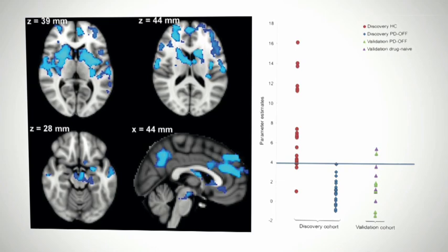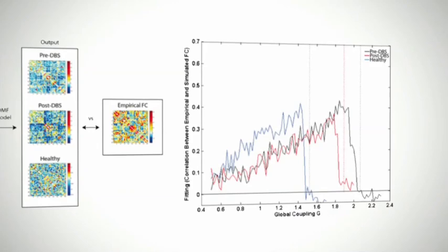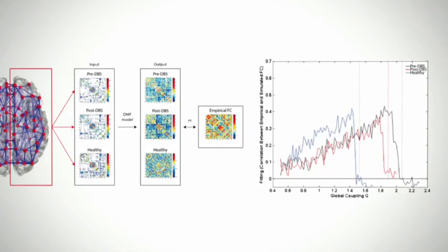Whole brain computational models have also been used for other neuropsychiatric disorders such as Parkinson's. A computational model showed significant recovery of structural network connectivity as a result of using deep brain stimulation to alleviate the symptoms of Parkinson's.